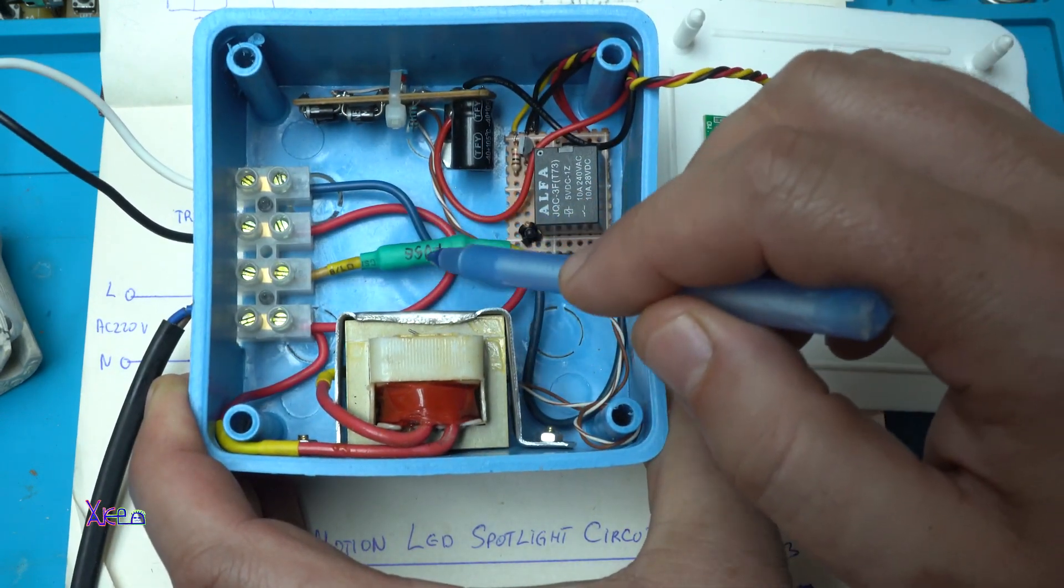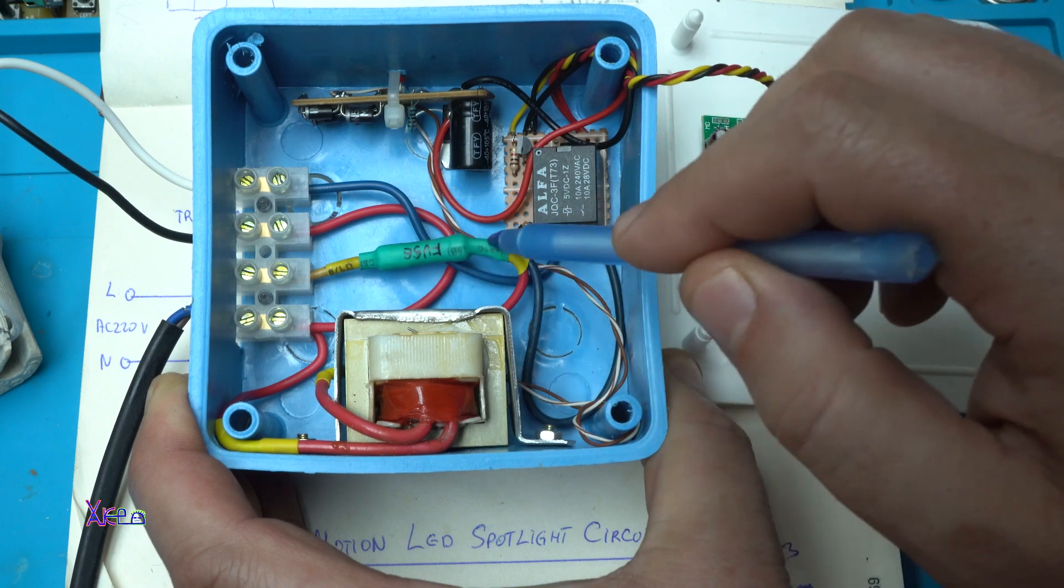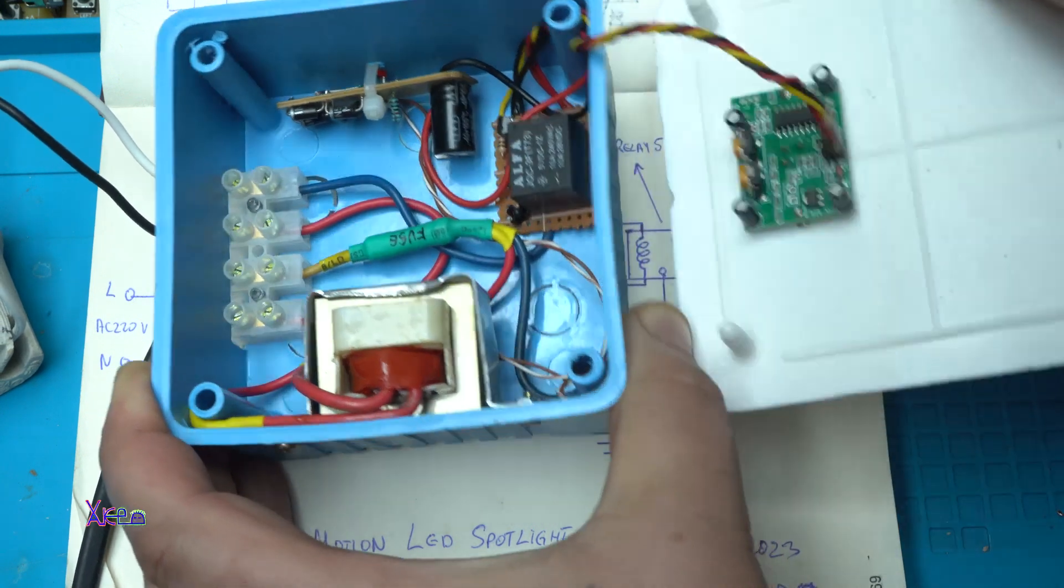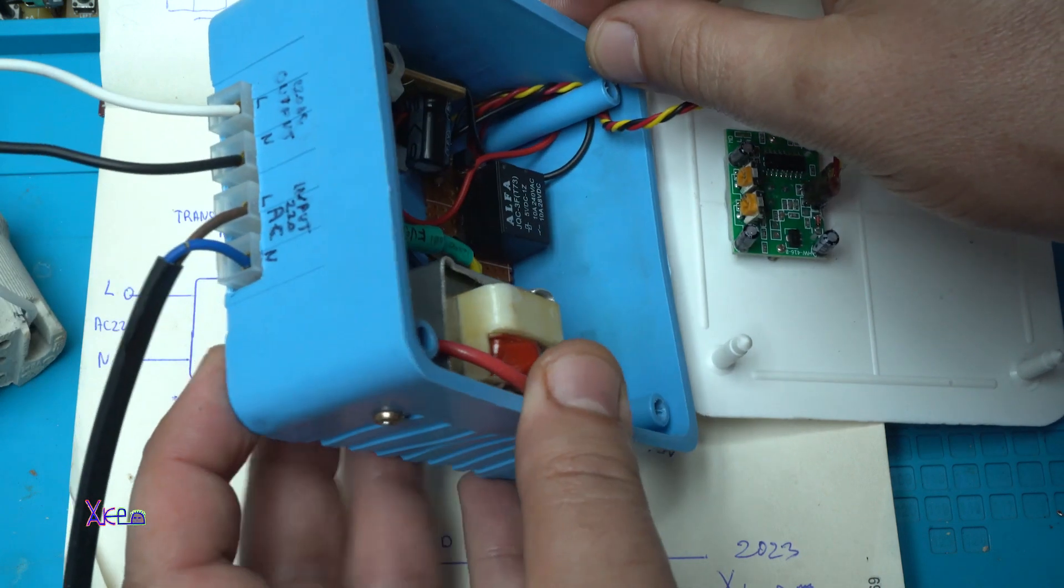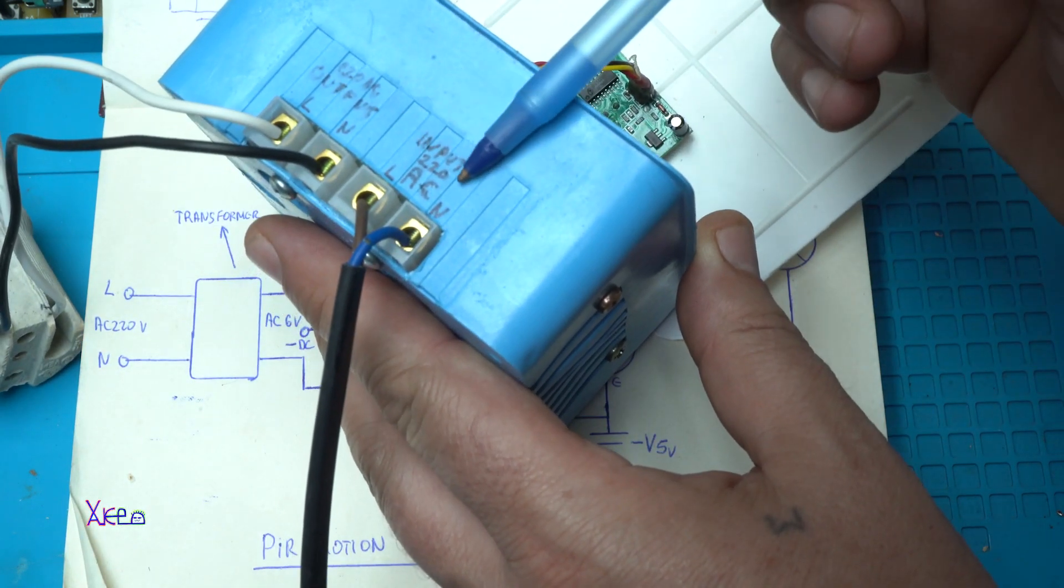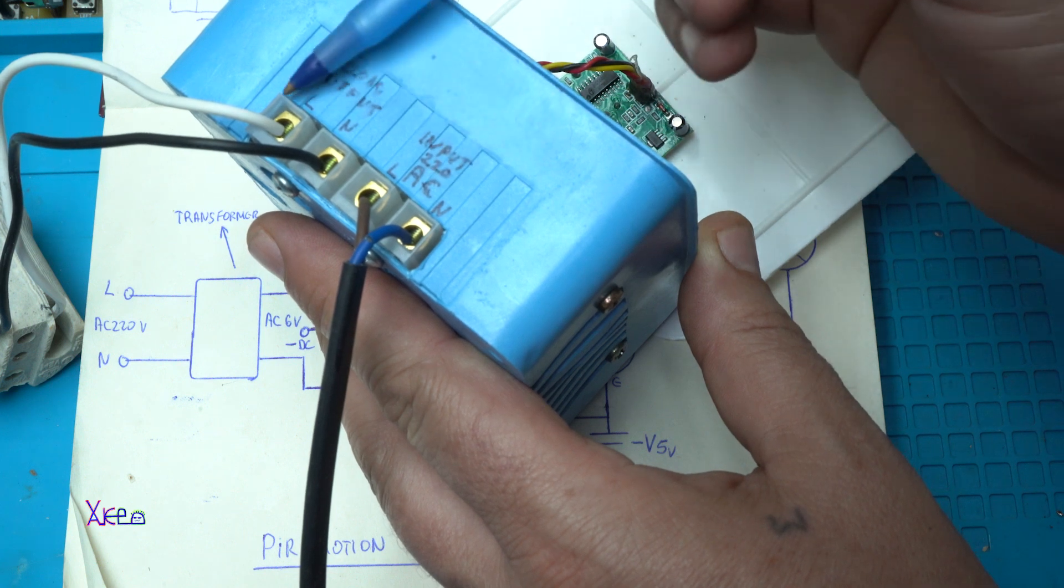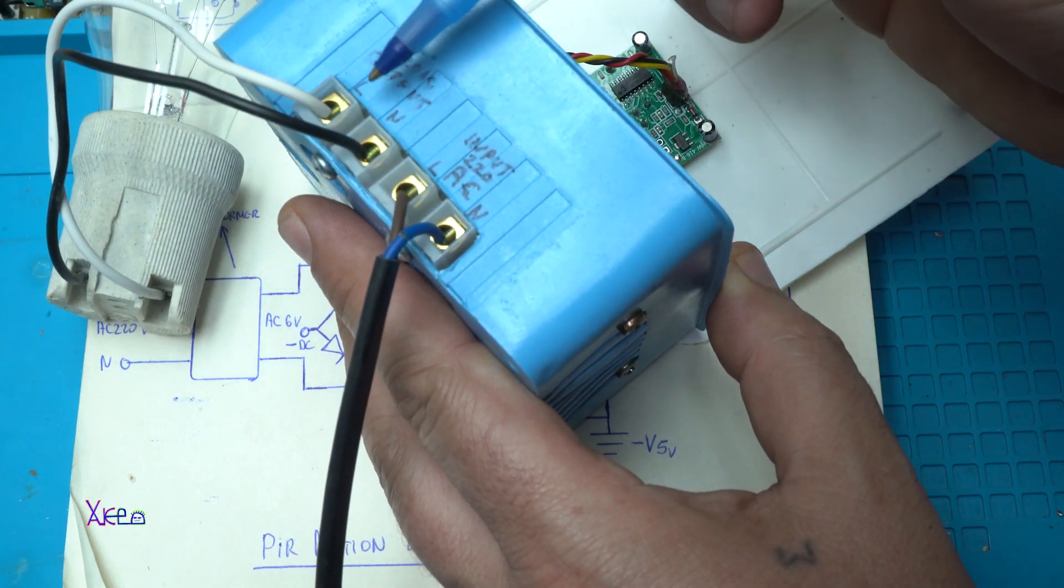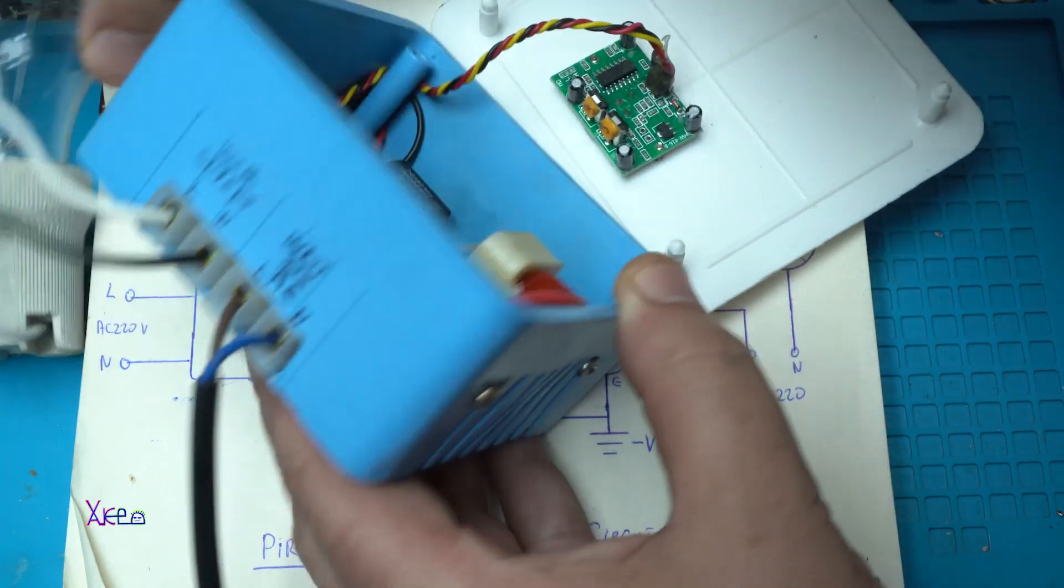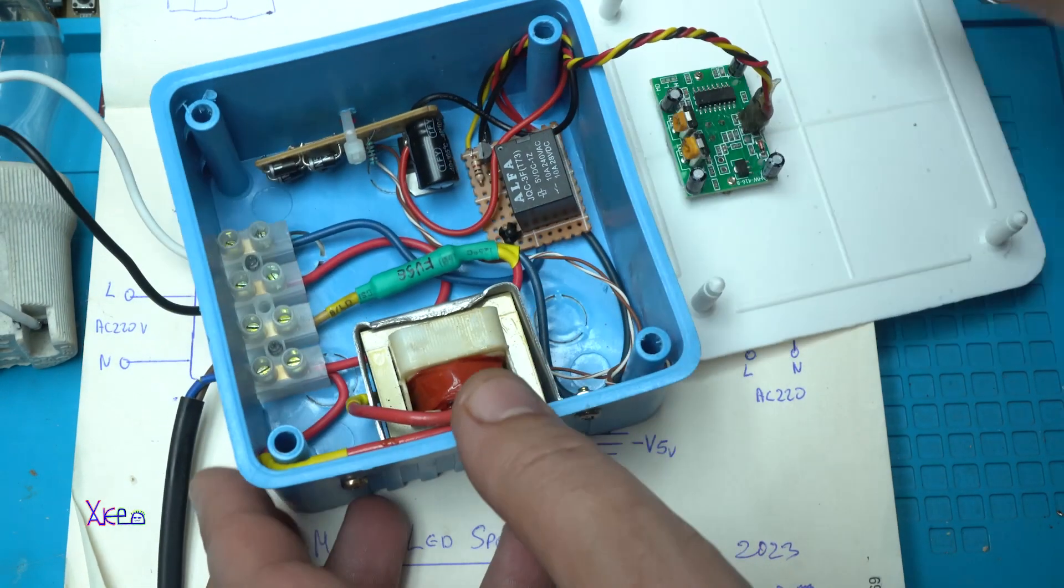Also I have added a fuse right here and everything is fit in the electric box. On the side we have input for the AC mains and here we are going to connect the bulb or that product that we need to control. Now I am going to test it for you.